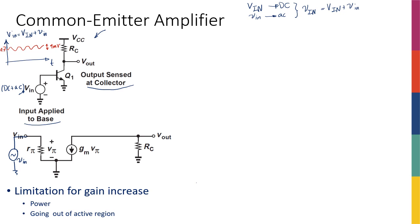Going back to the small signal circuit: I have the small signal Vin, the DC part is zeroed out, and I have r-pi and the gm·Vpi current source — ignoring the Early effect, so no r-naught. The emitter is on one side, base here, and collector here. The RC that was connected to VCC is now connected to ground, because all DC voltages become ground in small signal analysis.